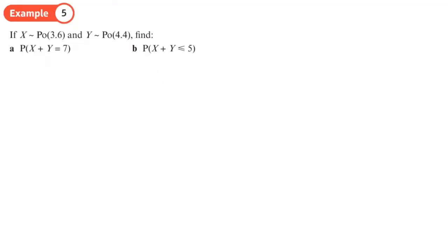If random variable X is a Poisson distribution with a rate of 3.6 and Y is a Poisson distribution with a rate of 4.4, first in part (a), find the probability that X or Y gives exactly seven. The first thing we need to do is work out the combined distribution of X and Y by adding their rates together.